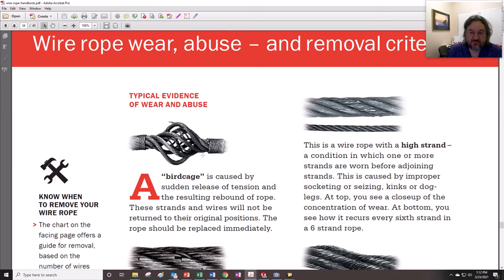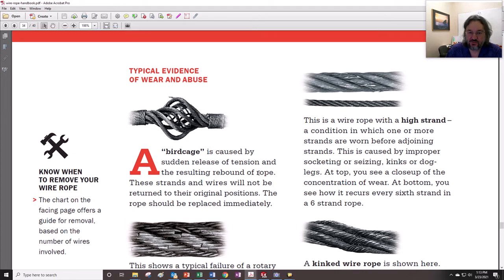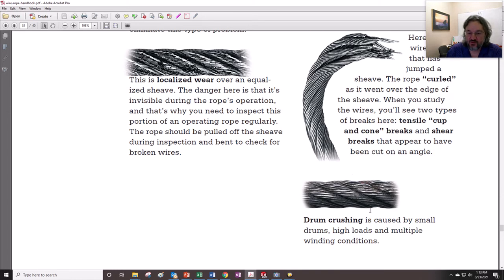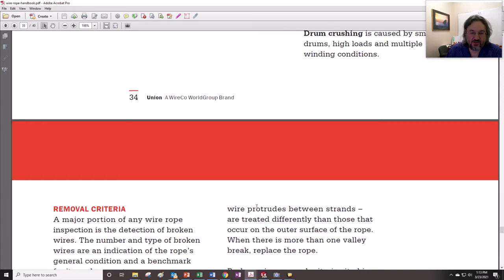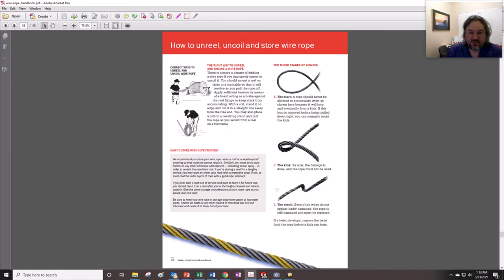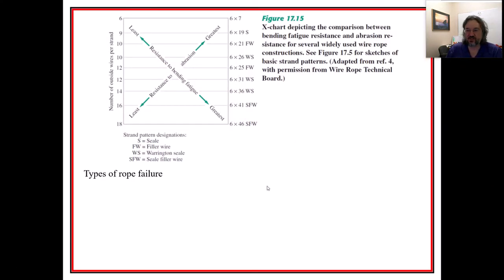Here we go, fatigue breaks. That's kind of ugly. You can see birdcage is caused from a sudden release of tension from resulting rebound. That's kind of cool. I think I went to the edge of the sheet. Pretty cool. Drum crushing is caused by small drums, so we want the diameter of the drum is kind of important right there. It's also, we'll see that that's where bending stress occurs in drums. You can see we can get kinks and cables and that type of thing. So these are types of failures.